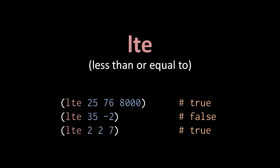A similar operator is less than or equal, which we write LTE. In the last example here, when we write LTE 227, that returns true because 2 is less than or equal to 2.